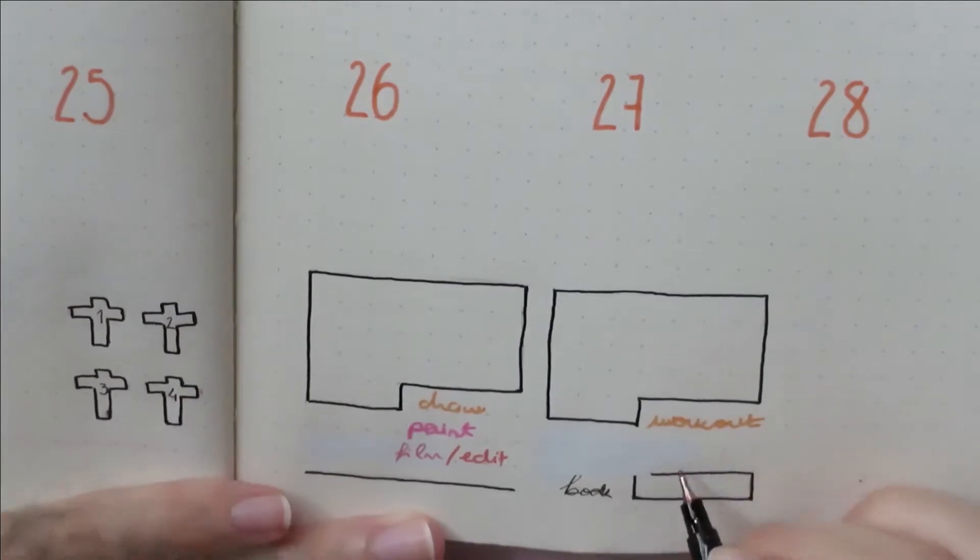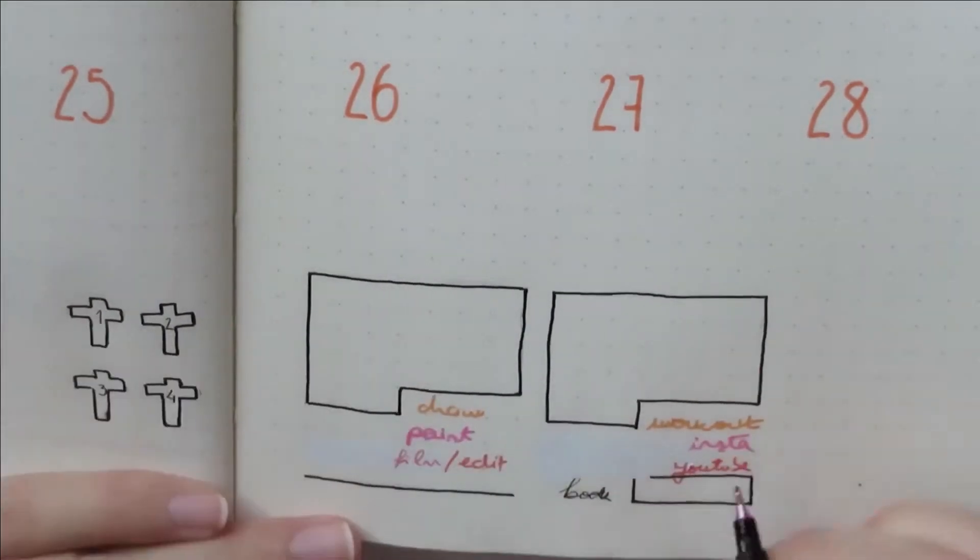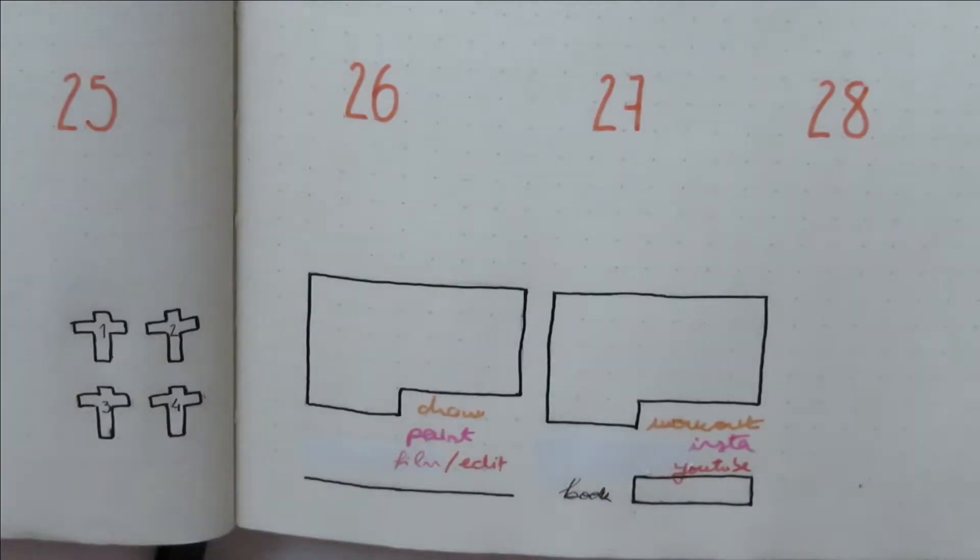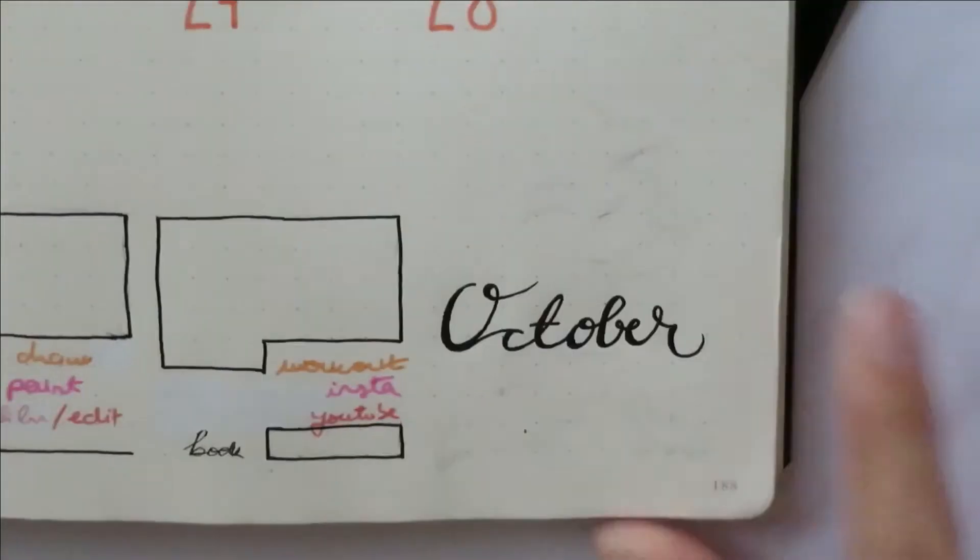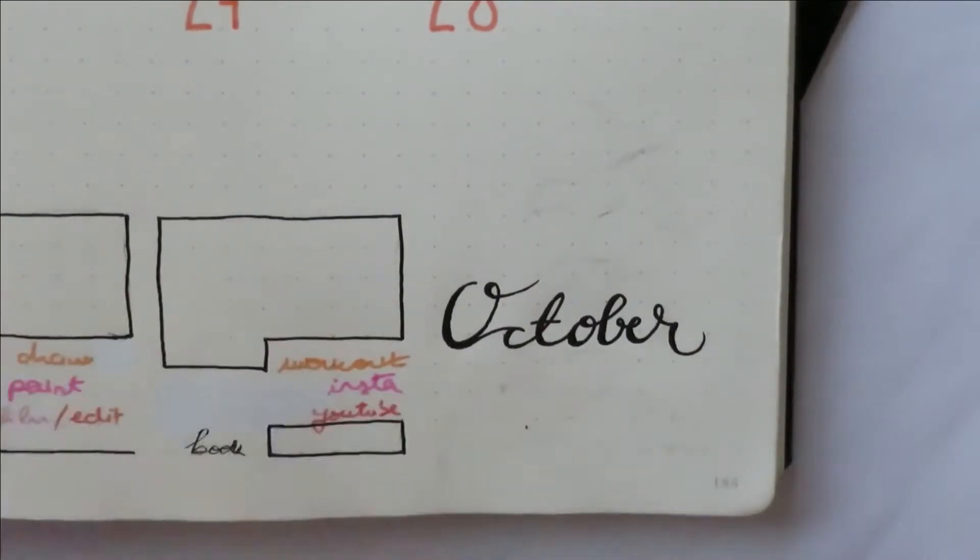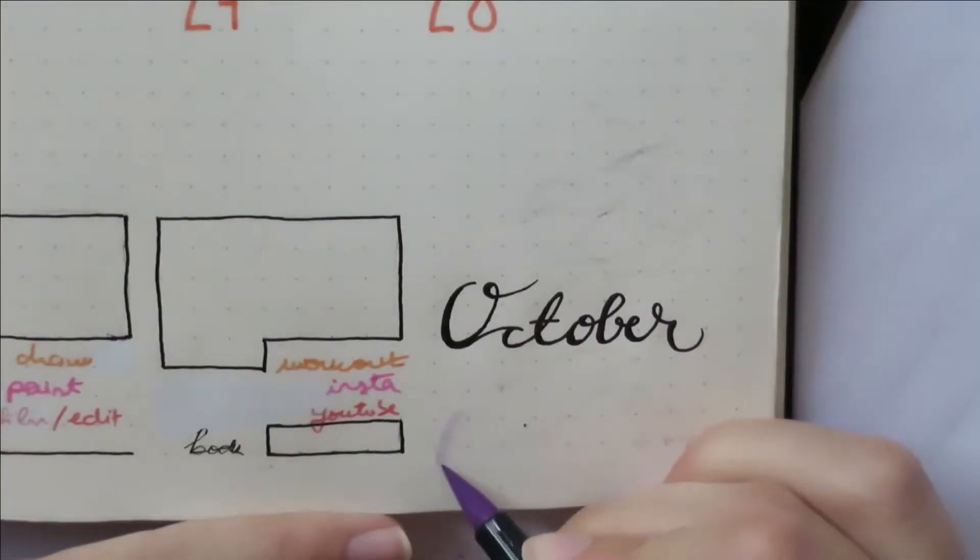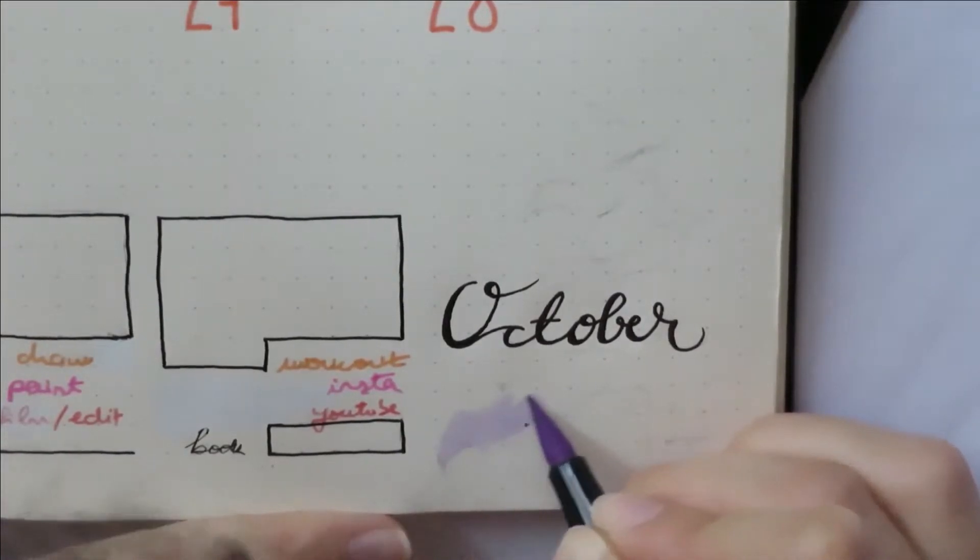You can see me writing down the habits that I'm going to track this month. There were no changes this month to the actual habits that I'm tracking. And to the side here is the only spot that was available for me to do a little decorating on.